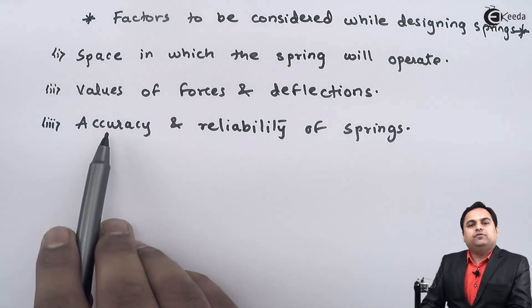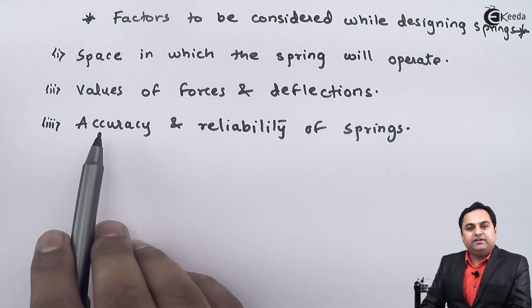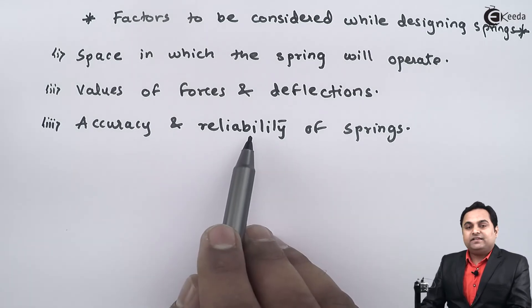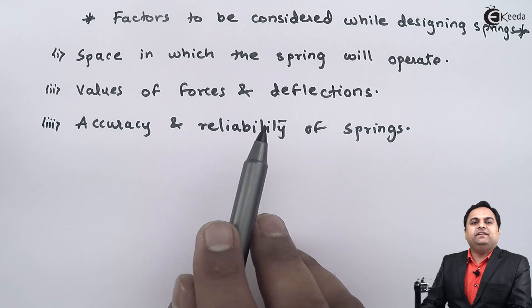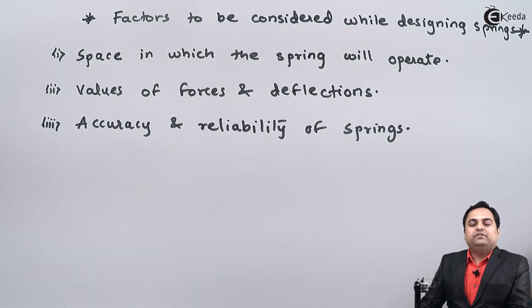Accuracy is one of the important considerations when we are designing the spring. Then there is reliability. Reliability is related to life, that is how much would be the life of the spring. That we have to decide before going on for the designing of spring.